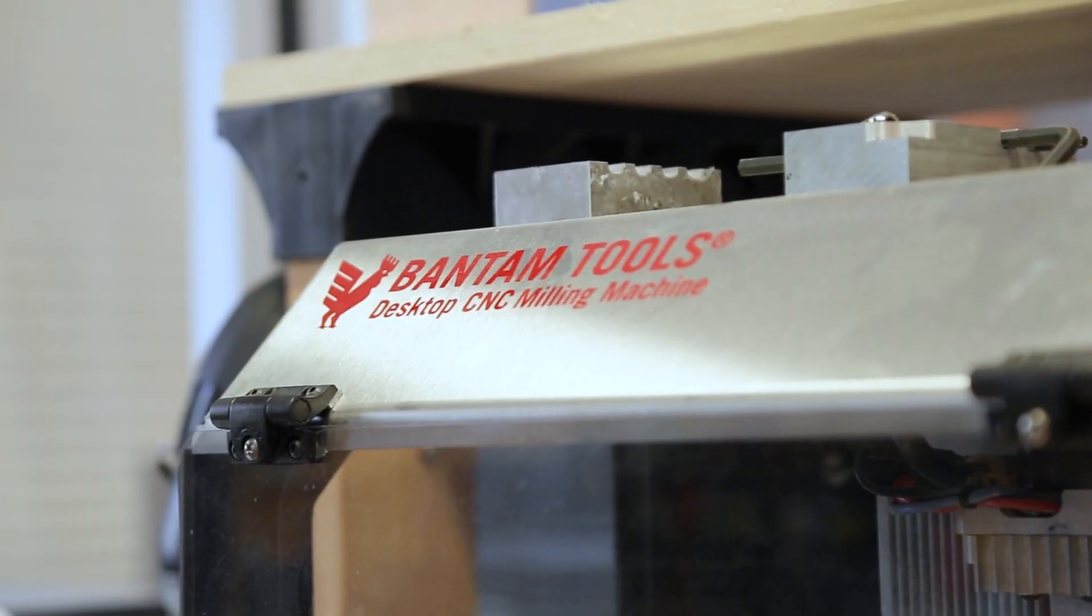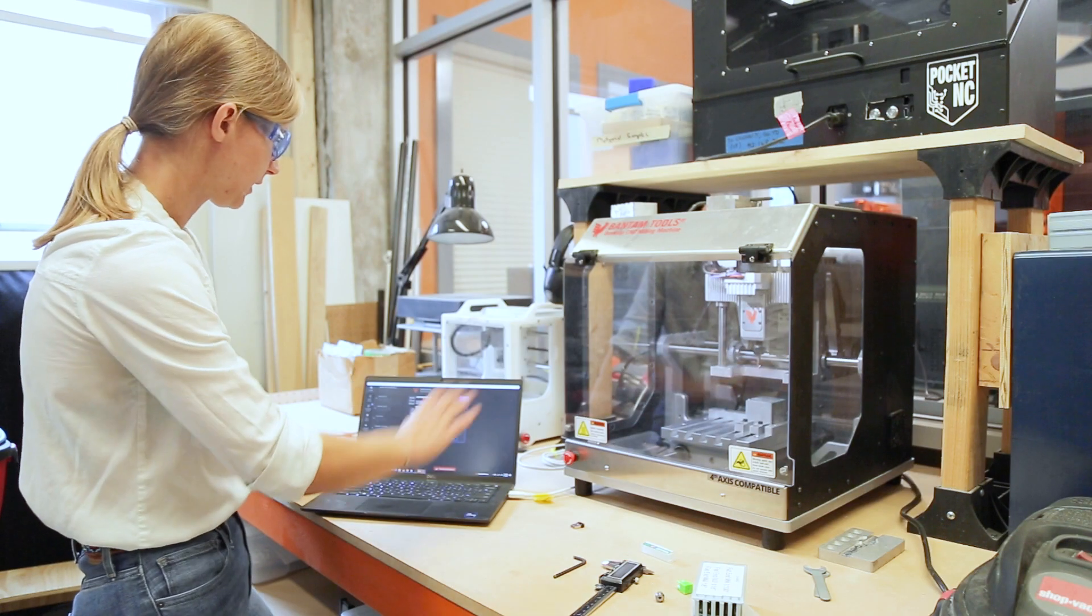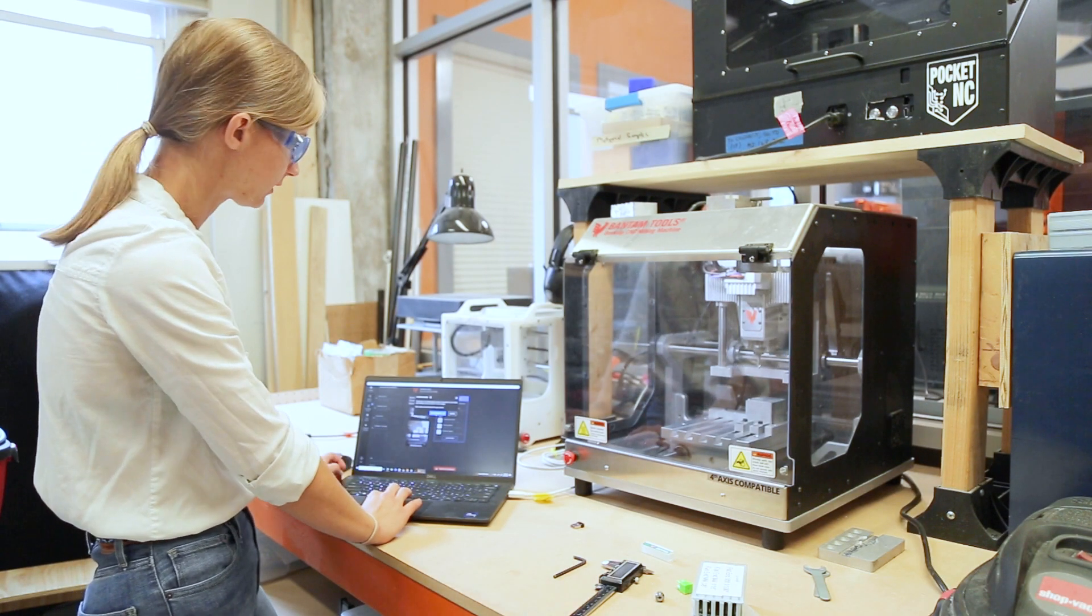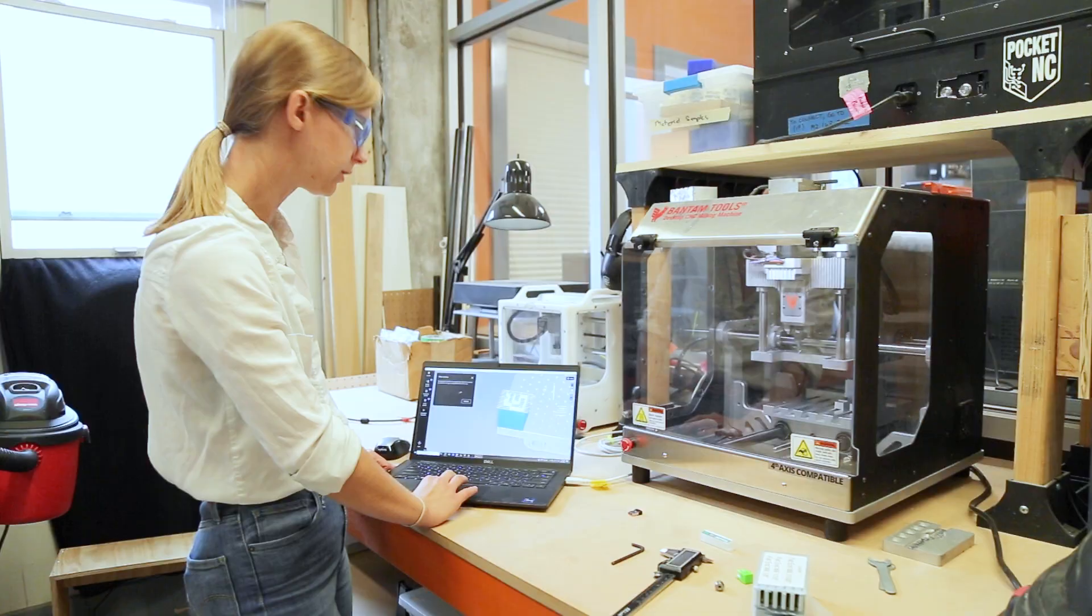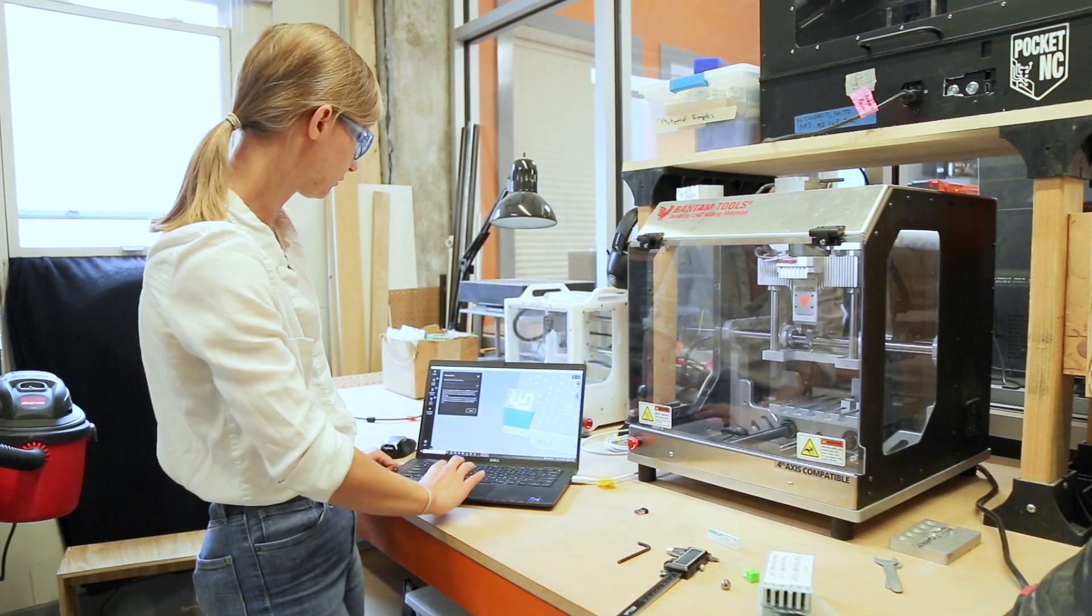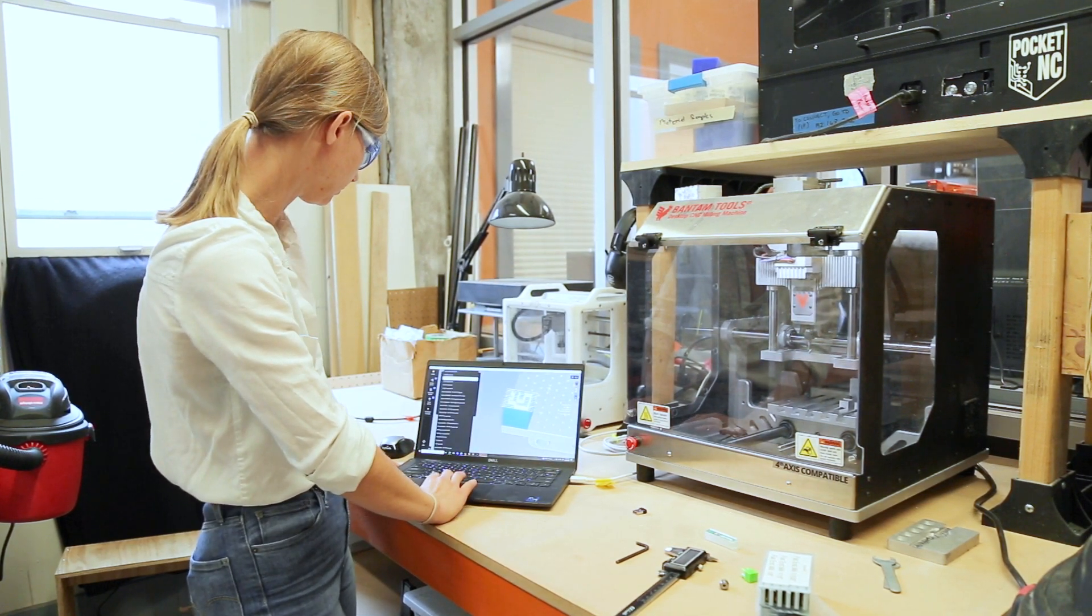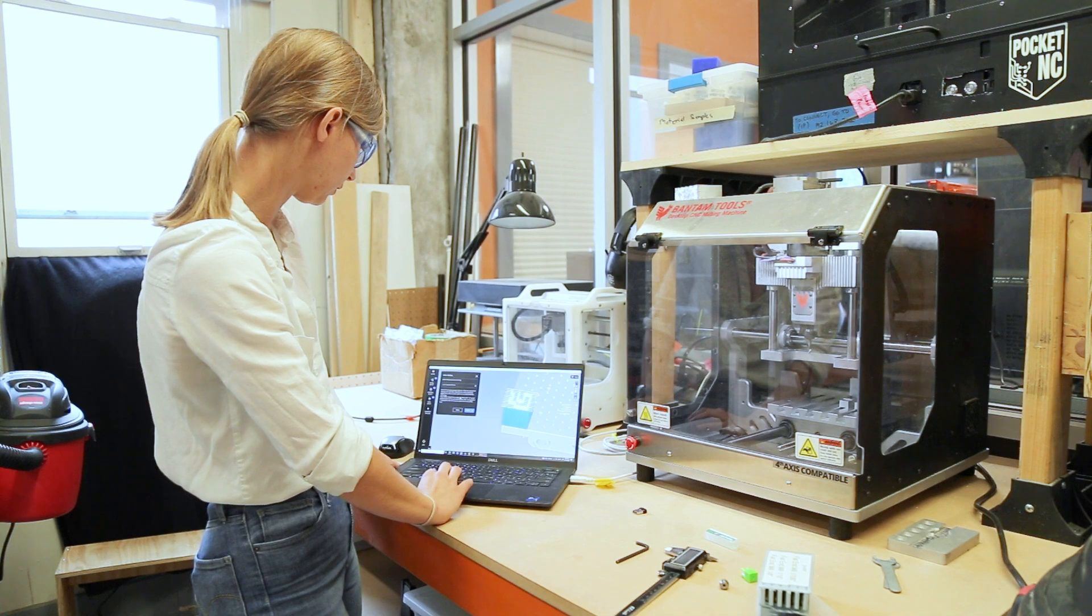Now that we've got the machine plugged in, it does a homing run to get started, so it just needs to check where everything is. First thing I'm gonna do is we just put in a quarter inch drill bit, so I'm gonna switch it over to tell it it's running with a quarter inch drill bit right now.